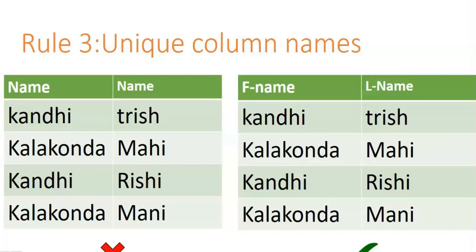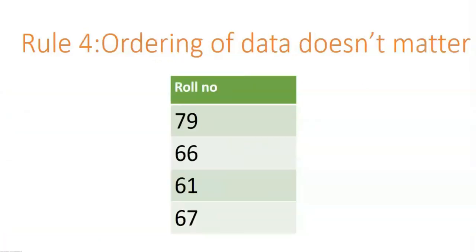Rule three states that column names should be unique. It is not recommended to use duplicate column names. Although a compiler may allow duplicate names, it creates problems for readability, so always use unique column names for easy understanding and accessibility. Rule four says that ordering of data doesn't matter — Oracle or any other database will not arrange data in any particular order, so ordering of rows is not necessarily followed.